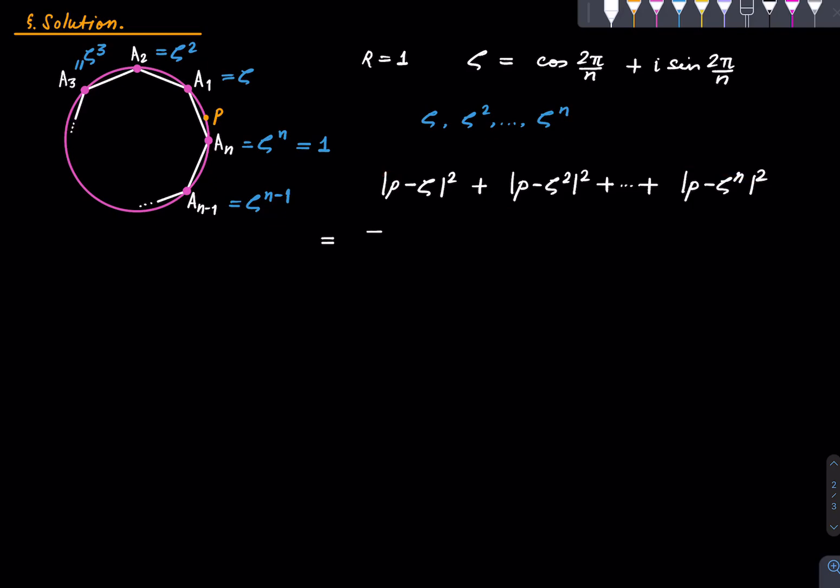Alright, what is this quantity? This can be written in a different way. It's just Σ(K=1 to n) |P - ζᴷ|². And now we just use this simple formula that |a - b|² is |a|² plus |b|² minus twice the real part of a̅b. So using that, this thing becomes Σ(K=1 to n) [|P|² + |ζᴷ|² - 2Re(P̅ζᴷ)].